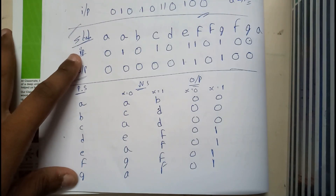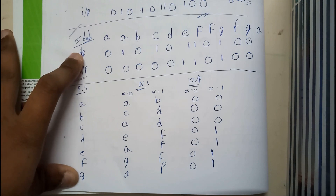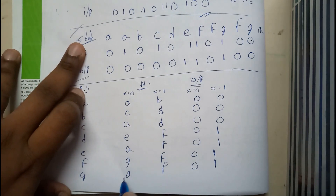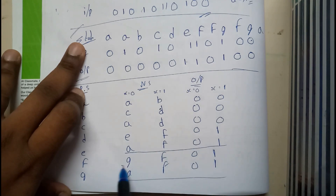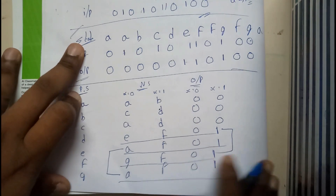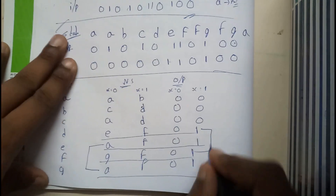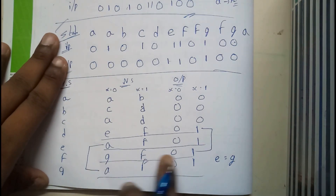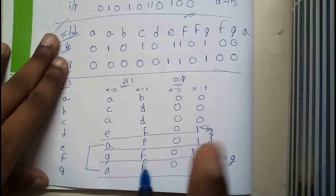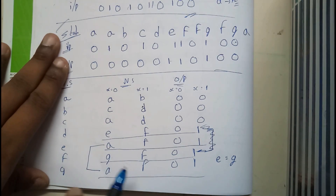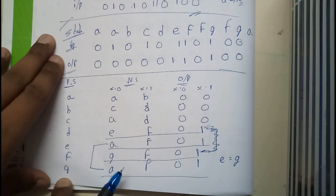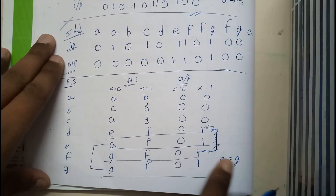We have successfully filled the whole table. Now if you observe the table carefully, you can see that two rows are matching — the rows for E and G are identical. So we can say that G equals E. From now on, wherever we find G in the table, substitute E.